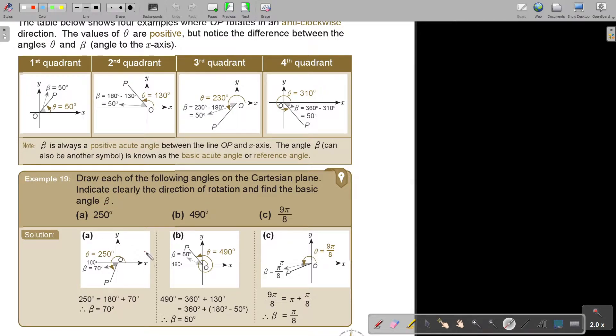Now let's look at this example. Draw each of the following angles on the Cartesian plane. Indicate clearly the direction of rotation and find the basic angle beta. 250. Now 250 will be between 180 and 270. So it will be there. So just say 250 minus 180, and I see 70. So beta will be 70.